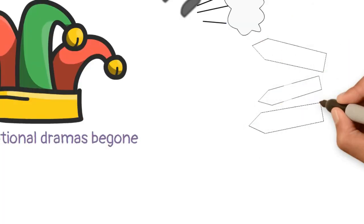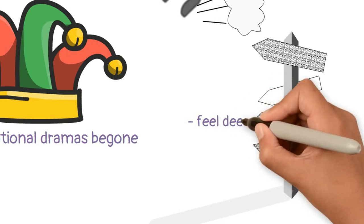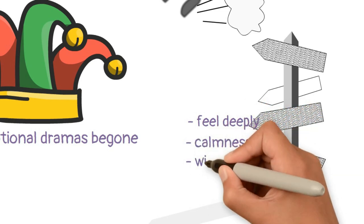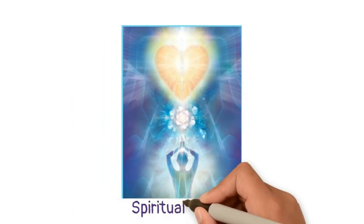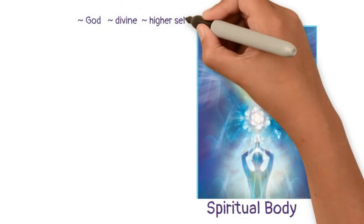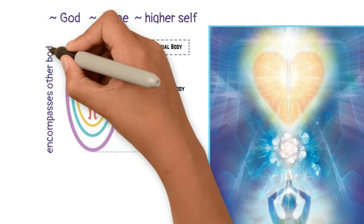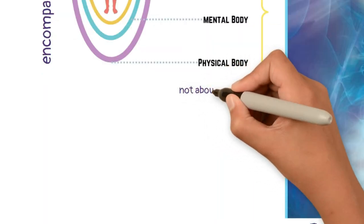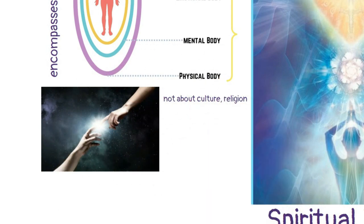A signpost that you are developing your emotional body is when you allow yourself to feel deeply and only respond from a place of calmness, wisdom, and inner core strength. Moving along, the fourth body is the spiritual body — this is how we feel our connection to all things, to God, to the divine, to a higher self. The spiritual body encompasses all other bodies, so if the other three bodies are undeveloped, the spiritual body will suffer. The spiritual body has little to do with what religion you follow or what culture you come from — it's all about your connection with the spirit.